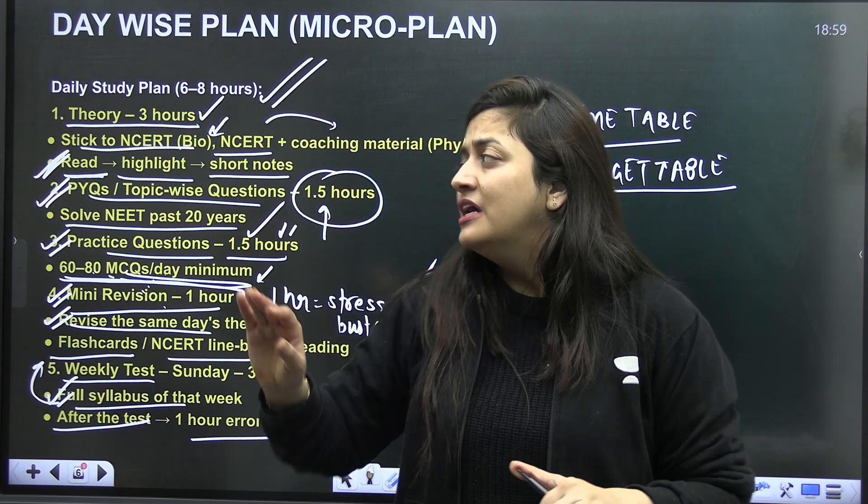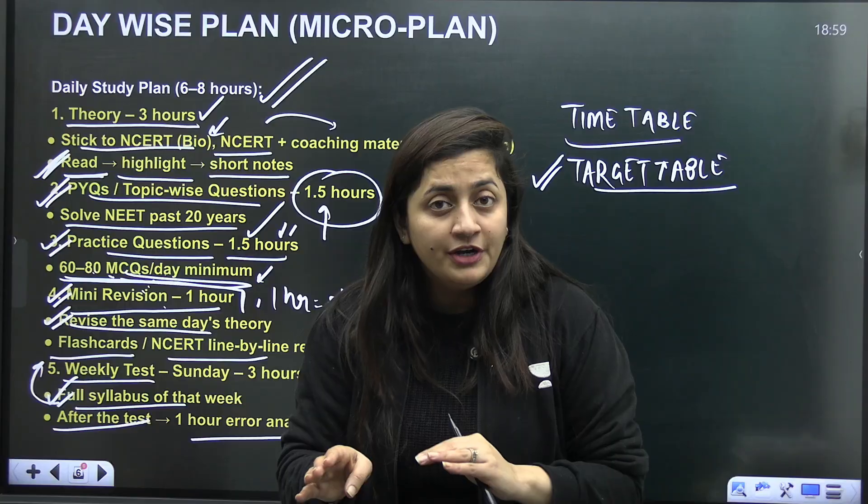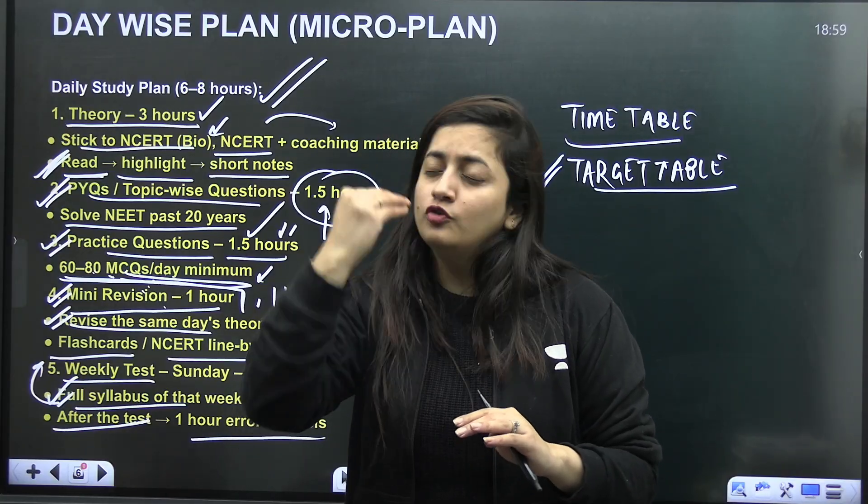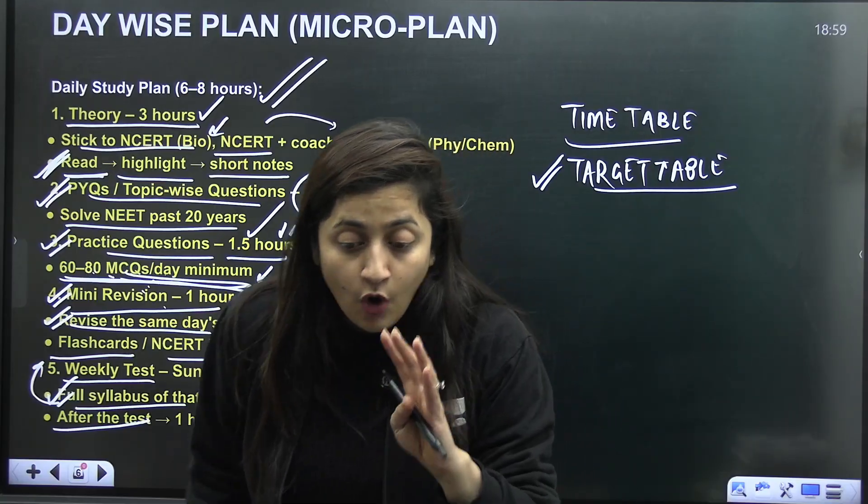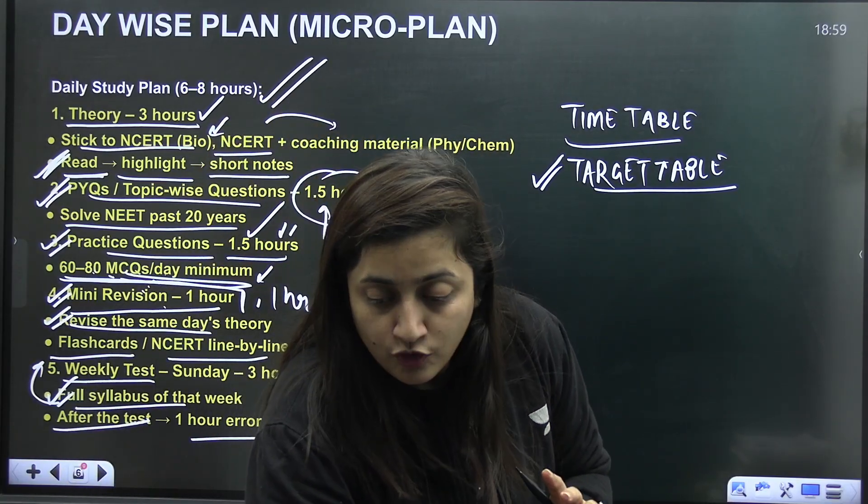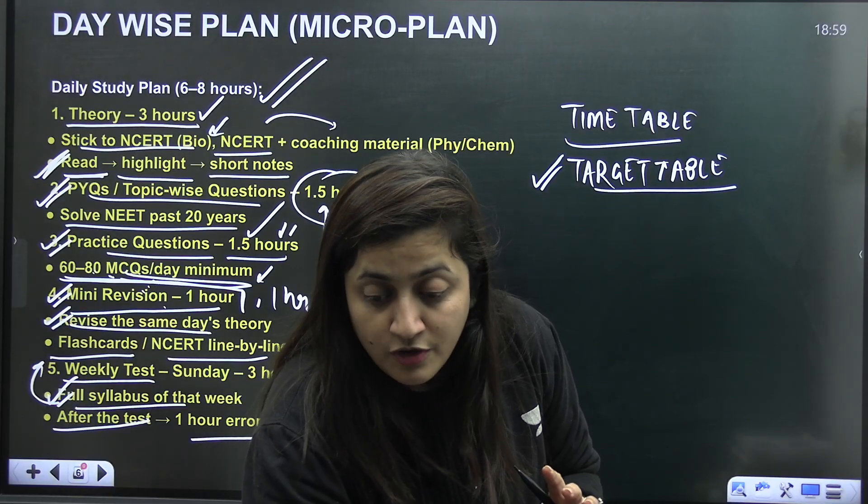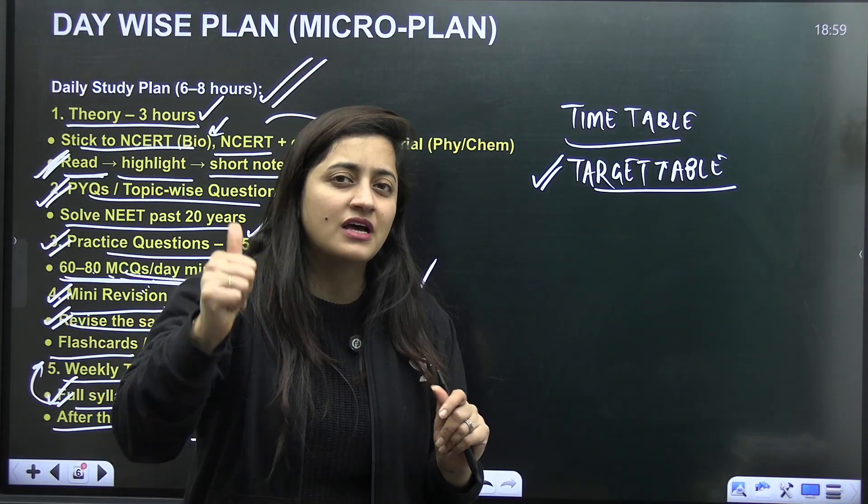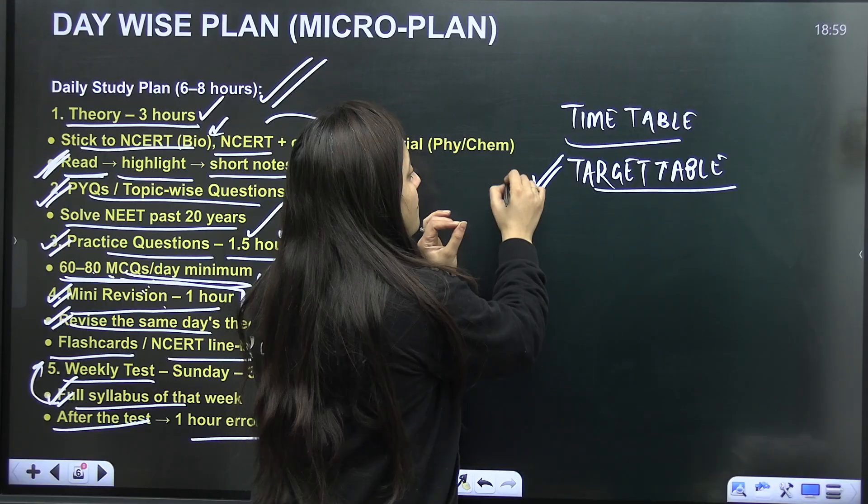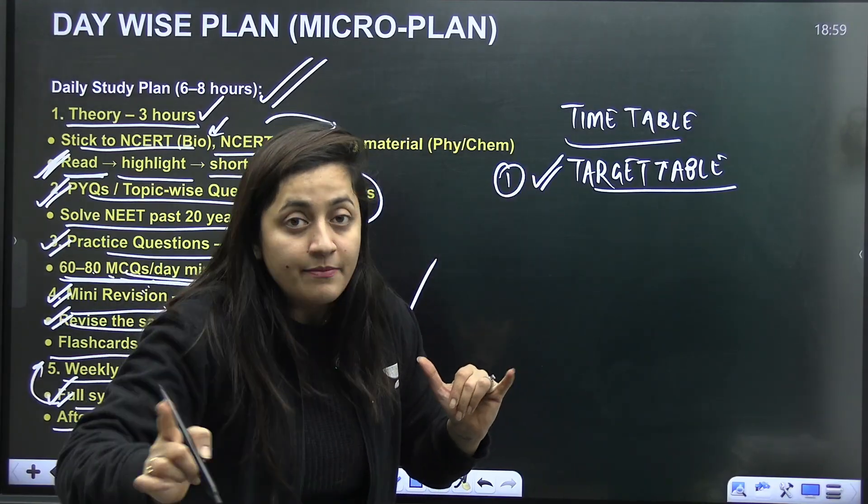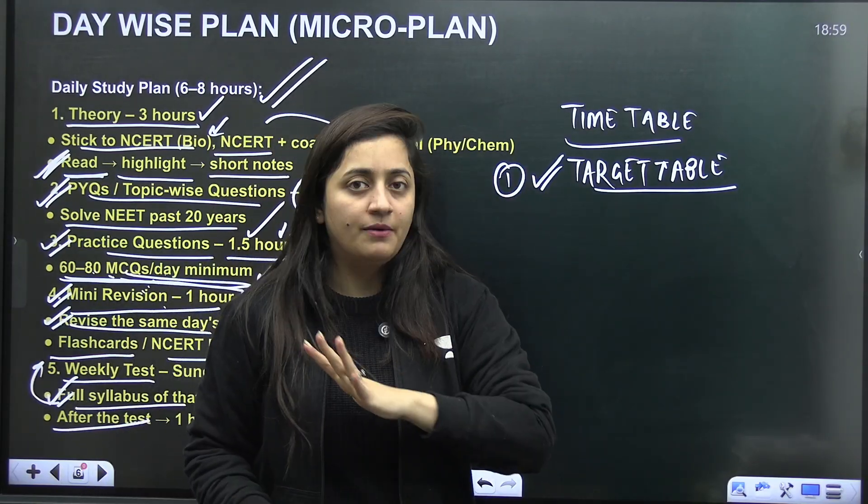So these are the things which, trust me, which I'm repeating in my all videos, plus every educator, you check any video, these are the things that every teacher is going to mention. So if we all are mentioning something, so obviously it is important. If we all, we all educators, if we are aligned on something means it is important. So this is something that you have to do. So just keep it in your mind. It is the target table, not the timetable. What is your target? Five chapters a week.